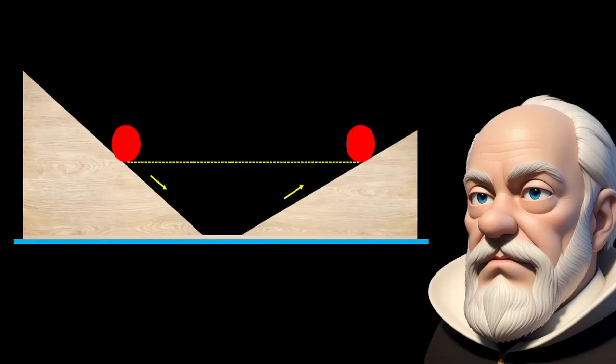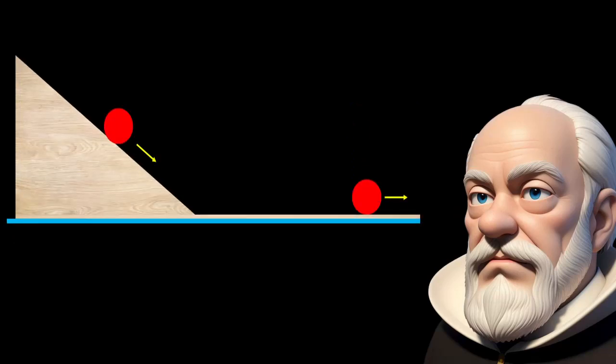If the slope of the second plane is decreased, the ball still reaches the same height, but travels a longer distance. In the limiting case of a horizontal plane, the ball travels an infinite distance, never ceasing its motion.